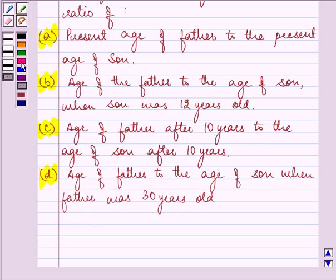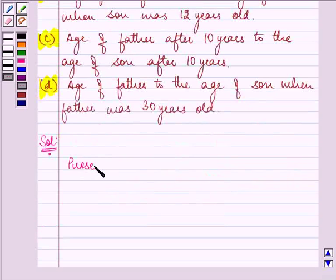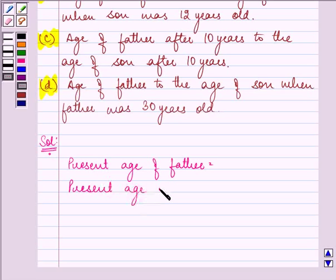So, this is a little long question. Let us write down the present ages of father and that of the son. Present age of father is 42 years and present age of son is 14 years.